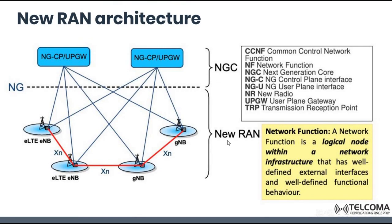Here we see how the New Generation Core (NGC) is connected to the new RAN, where eNodeB is connected to another eNodeB through the XN interface, and eNodeB is connected to gNodeB through the XN interface. All eNodeBs are connected to the NGC, which has a New Generation Control Plane and a User Plane Gateway Function. This simple diagram shows how they are all interconnected.